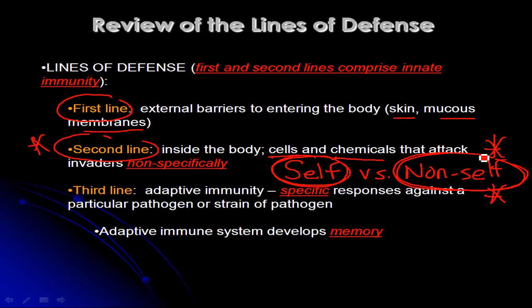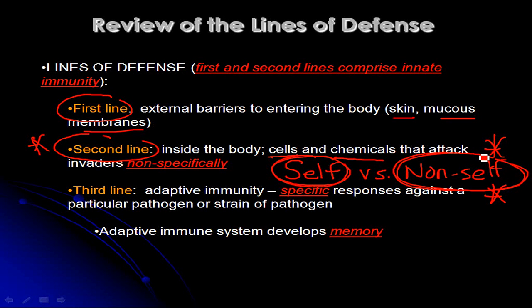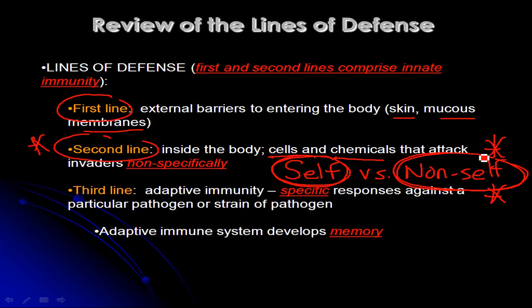In some people, the immune response to non-self things like pollen goes overboard and you develop an allergy. People with peanut allergies — peanuts aren't going to multiply inside your body, but on their surfaces they have molecules different from the molecules on your cells, and that constitutes non-self. Some people's reaction goes overboard; in other people our immune systems have learned to tolerate most things we eat. So self versus non-self is very important, and your second line of defense must be able to distinguish between them.